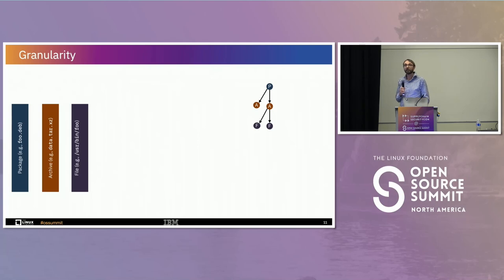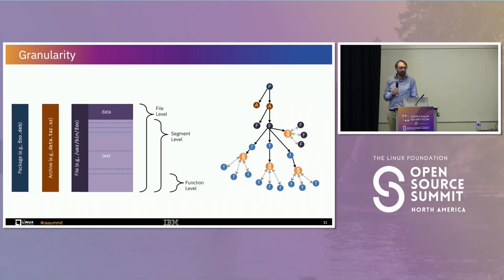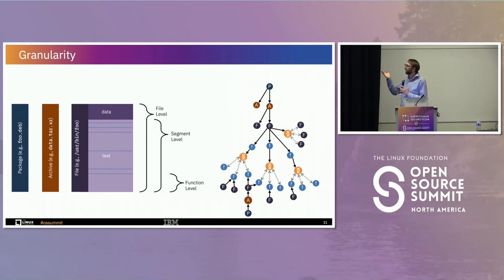We can do this at multiple levels of granularity. Software distribution is like a turducken — archives filled with archives filled with other archives that we continuously unpack. When we get a new file like a Debian file, RPM, or Docker image, we recursively unpack it and find all files until we find executables. From there we compute a gene across different granularities: the entire file, a segment like the text or data segment, or each individual function. As we do this, we build a graph of these different representations and start making connections — which functions share the same genes, which files were they in, which packages and archives.